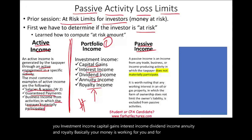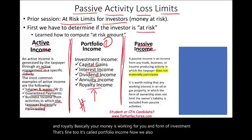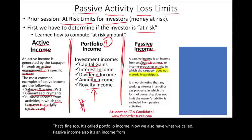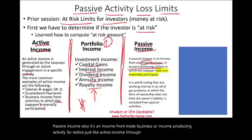We also have what we call passive income. It's income from a trade, business, or income-producing activity — just like active income through active engagement, except the taxpayer does not materially participate.